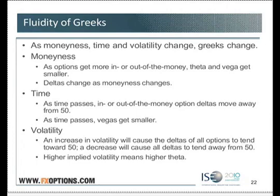As options get more in the money or out of the money, theta and vega get smaller. That is to say, at-the-money options have the highest theta and vega. Delta's changes — moneyness changes too — and that's measured by gamma. We've already covered that.